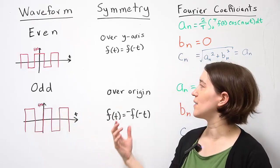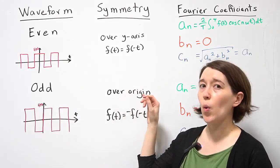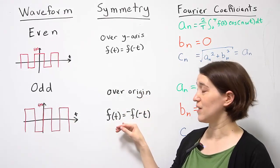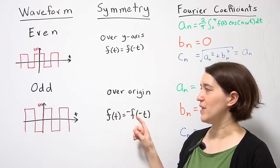The reason it's odd is because it's symmetric over the origin. Mathematically, this can be written as f of t equals negative f of negative t.